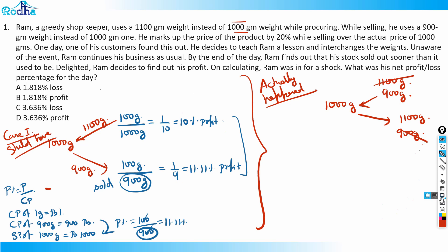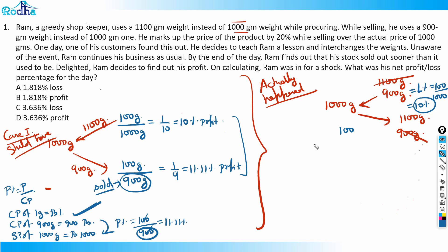He thinks he is selling 900 grams to the customer and cheating them, but because the weights are interchanged, he is actually giving 1100 grams. So on the buying side: paying cost of 1000 grams but getting only 900 — that's a loss of 100 on 1000, which is 10 percent loss. On the selling side: he's losing 100 grams on 1100 grams sold, so loss percentage is 1/11, which is 9.09 percent loss.